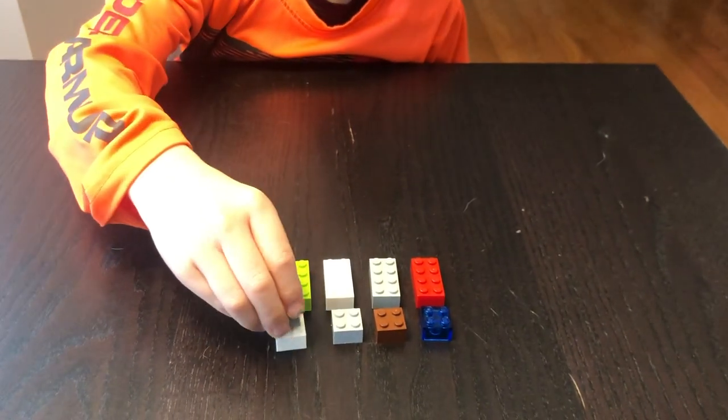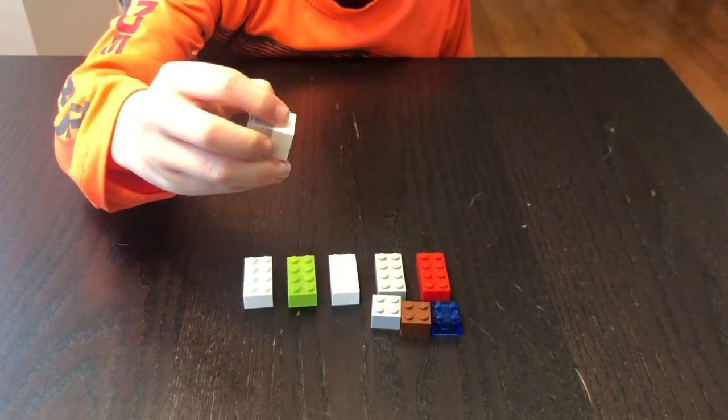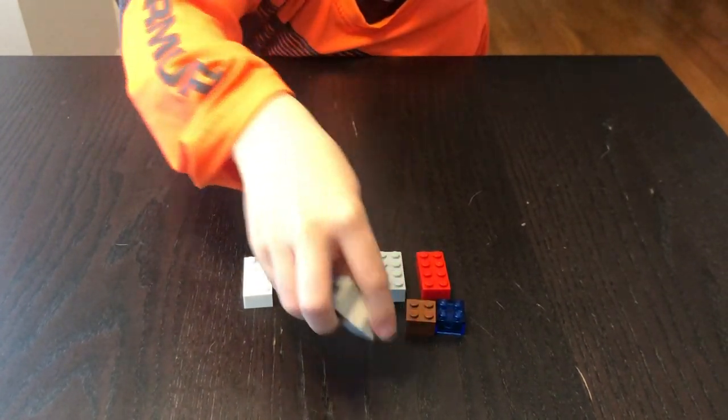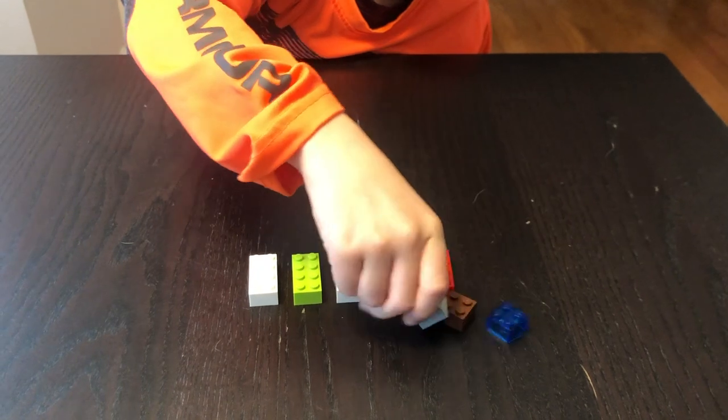We're going to hook this gray one onto this white one, hook this white one onto this gray one, and hook this gray one onto this brown one.